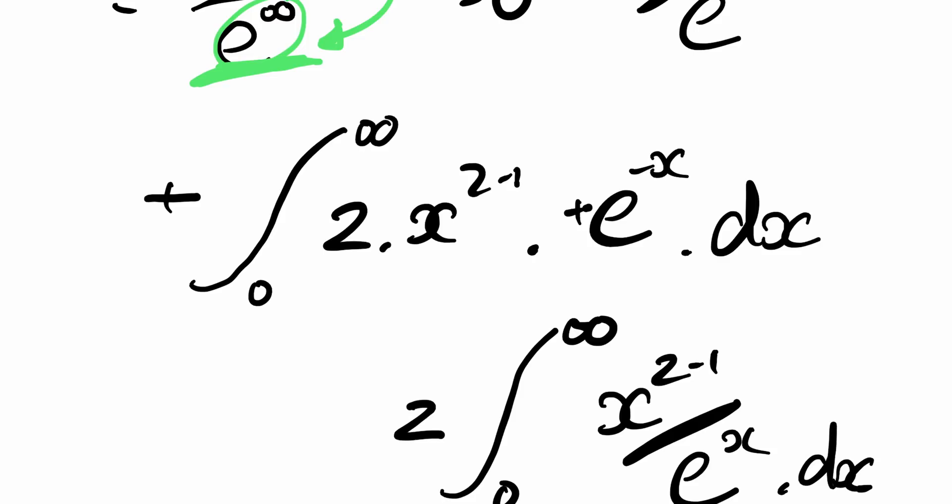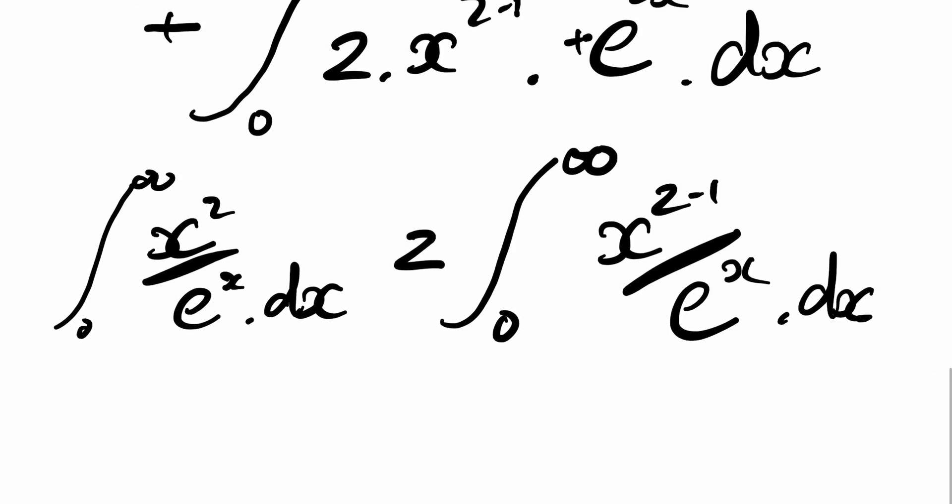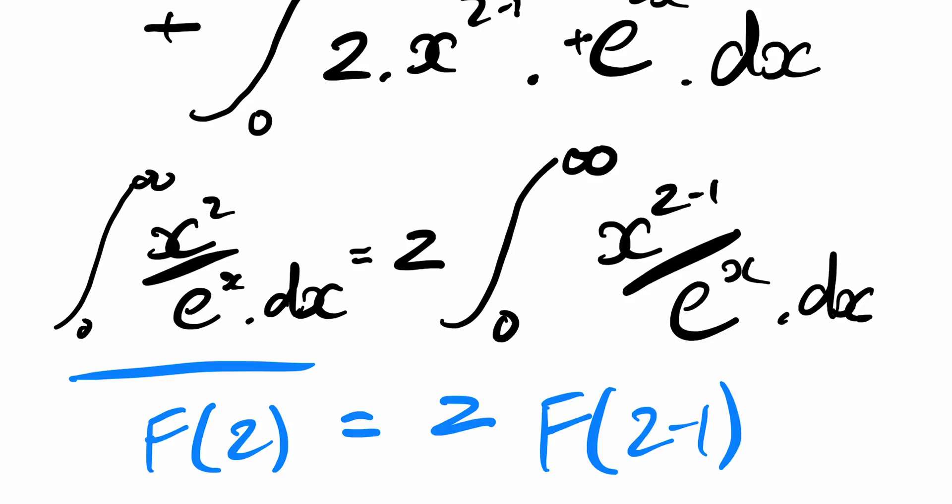And what does that equal? Well, it equals our original thing. That's zero to infinity, x to the z divided by e to the x dx. Now that's exactly what we wanted. If this here is a factorial function of z, you can see it equals z outside of one less than z. And that is exactly the recursive relationship we wanted.